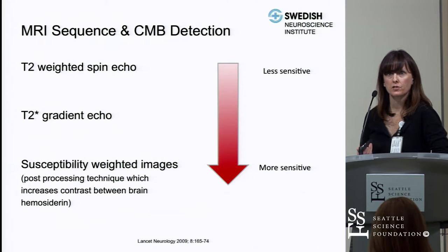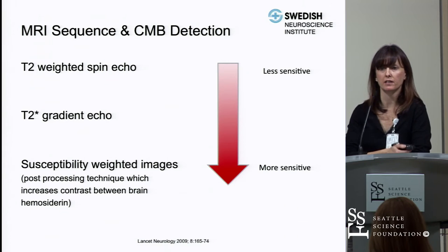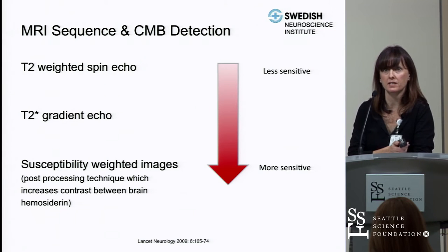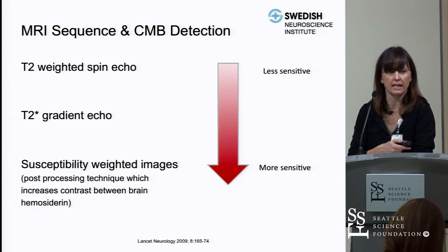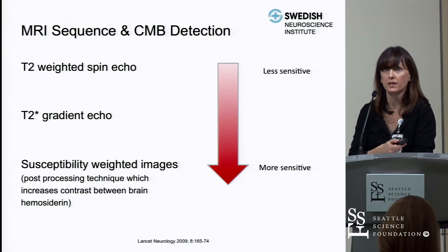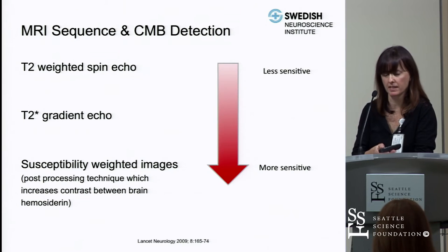The most sensitive MR imaging test for microbleeds is susceptibility-weighted imaging, which is a post-processing technique that increases the contrast between brain and hemosiderin. T2 gradient echo is in the middle, and T2-weighted spin echo is the least sensitive.